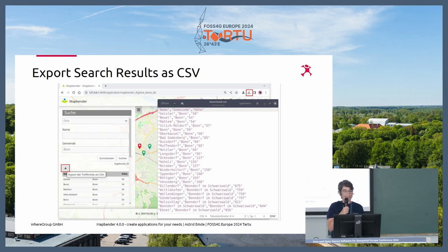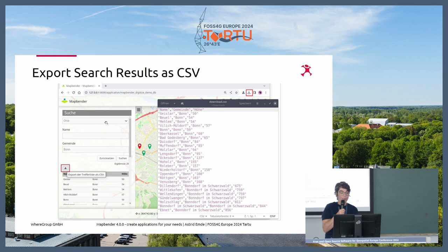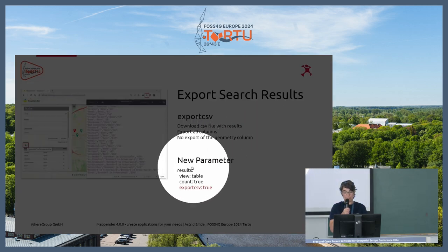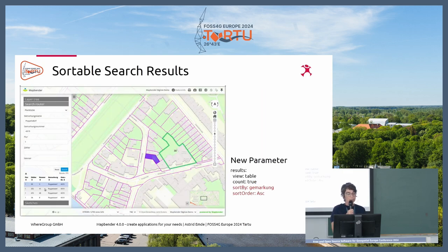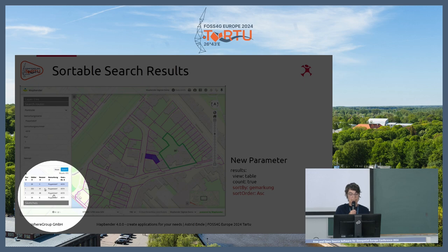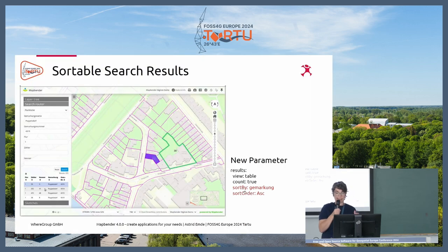We have a search router — a really nice tool. From the data of your PostgreSQL database, you can easily create search elements. It is now possible to export the result list to CSV and easily download it. This is configured by adding an export_csv: true parameter, and then this new button will show up. There's another new feature: the result list is now sortable, and you can define with two parameters which column you would like to sort by and whether ascending or descending.